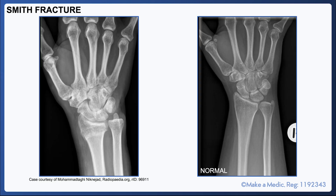A Smith fracture is sort of the opposite of a Colles' fracture, in that it's a distal radius fracture in which the distal fracture component is displaced in a volar direction. It typically occurs after a fall onto a flexed wrist. As you can see on the PA view, it can look pretty similar to a Colles' fracture — the distal radial contour is no longer smooth, and there is a loss of radial height.